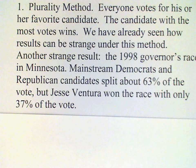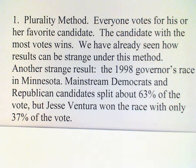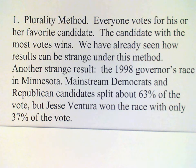The first method is the one you're probably most familiar with. It's called the plurality method, and it is used for most of our political elections. It is the simplest method — basically, whoever gets the most votes wins the election. We've already seen how we can get a peculiar result that way. In 1998, the governor's race in Minnesota featured two mainstream candidates, a Republican and a Democrat, and they split about 63% of the vote. But the alternative candidate, Jesse Ventura, came up with 37% of the vote and won the race, becoming Minnesota's governor for the next four years.